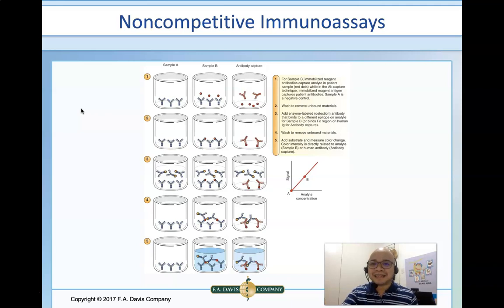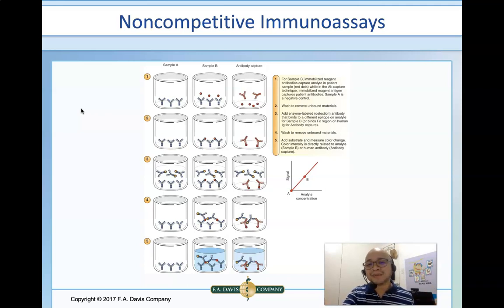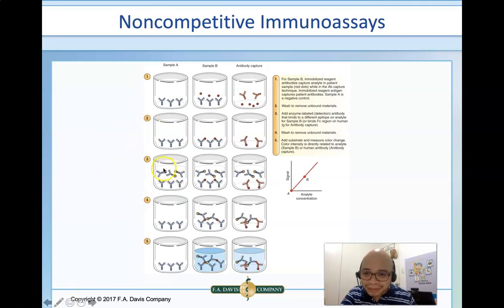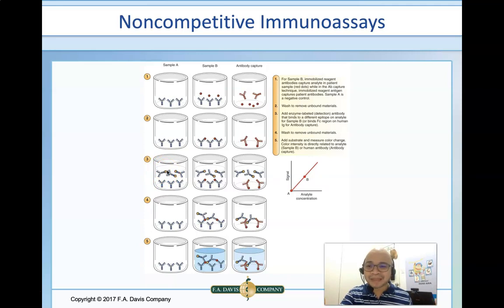In Sample A, since it's a negative control, the antigen is not present. In Sample B, we add the patient sample antigen. These Y-shapes are antibodies that have been absorbed in the solid phase. In the second step, we wash to remove unbound antigen, and then we add the second antibody.